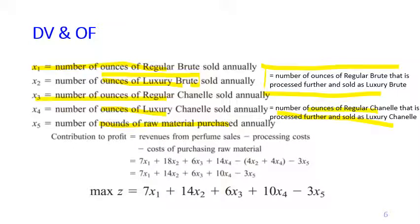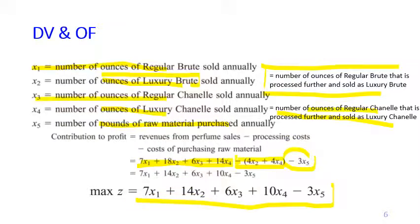Using these decision variables we can define the profit to maximize. For x1 through x4 these are the selling prices, minus the processing cost — minus $4 for x2 and x4 — and then minus 3 times x5, because for every pound of raw material purchased you pay $3. This expression is the objective function we want to maximize.